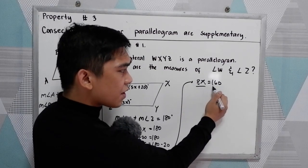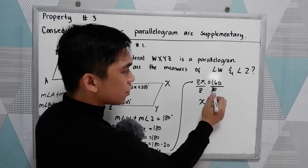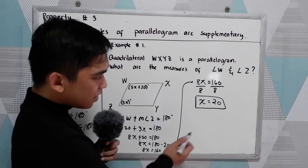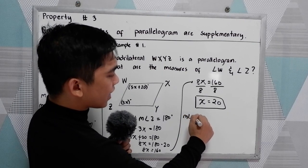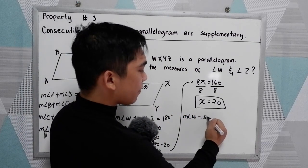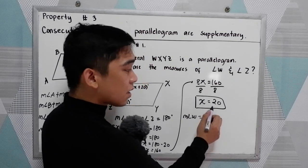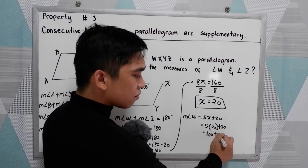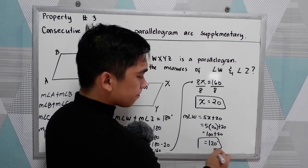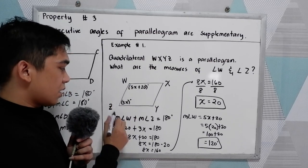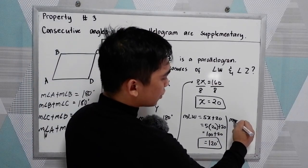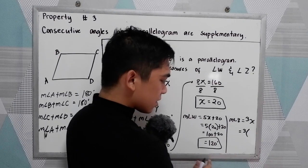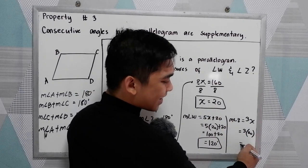So we have 8X equals 160. To find X, divide both sides by 8: X equals 160 divided by 8, which gives us 20. Now substitute X equals 20 to find the angles. Measure of angle W equals 5X plus 20, so 5 times 20 plus 20, that is 100 plus 20, equals 120 degrees. Measure of angle Z equals 3X, so 3 times 20, that is 60 degrees.